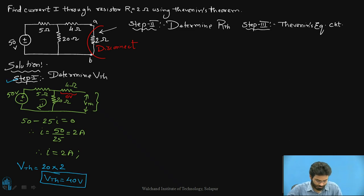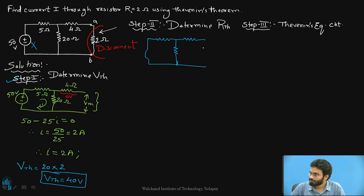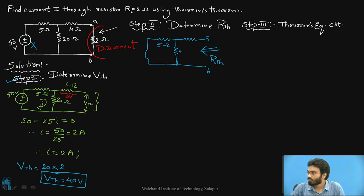Step number 1 is successfully accomplished. Similarly, in step number 2 we are going to eliminate the source and redraw the circuit. The voltage source is short-circuited this time, and RL remains in a removed state. Whatever you look into the circuit across points A and B is known as Thevenin's resistance. So now I have 5 ohms, 20 ohms, and 4 ohms back in the picture, with the 50 volt source simply replaced by a short circuit.